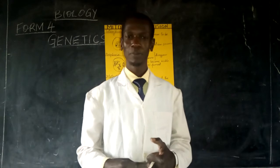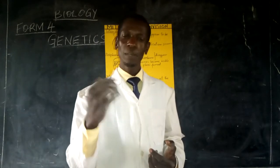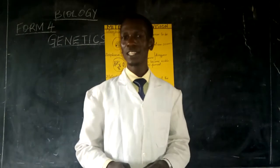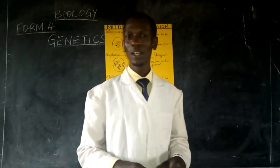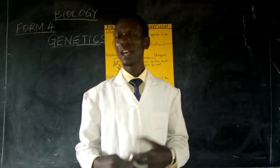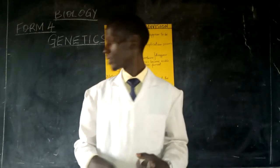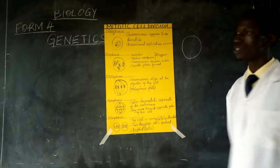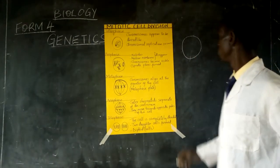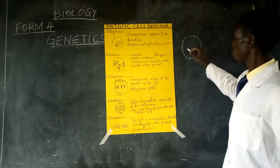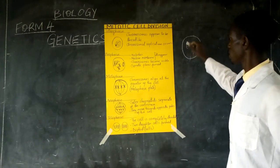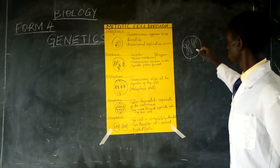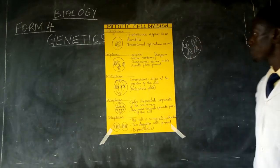I call it mitosis. In the process of mitosis, the cell divides to result in two daughter cells which have the same number of chromosomes as the parent cell. For example, if this is a cell and it was subjected to the process of mitotic cell division, and it was having two chromosomes, for example —